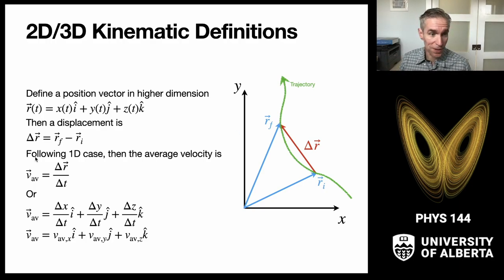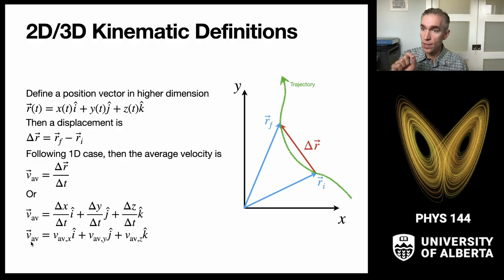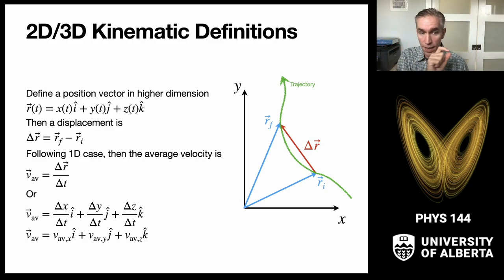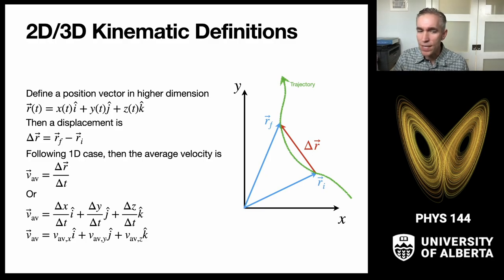Following the one-dimensional case, we consider the average velocity to just be the change in displacement over some finite interval of time, and then we consider what happens independently in each of the coordinates. The average velocity vector is just the component-wise sum of the velocity vectors in the x, y, and z directions. In a Cartesian coordinate system, the velocities behave independently, and we can treat each dimension as separate from the others.